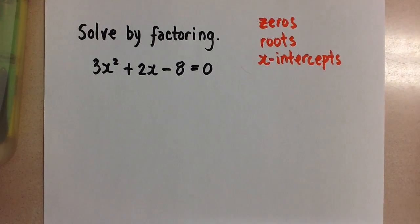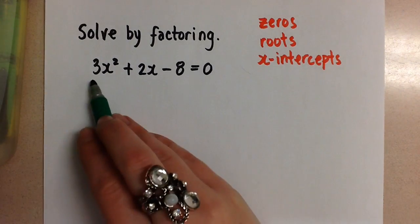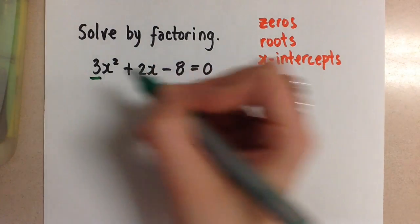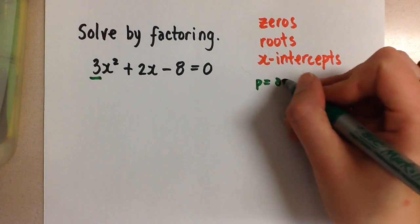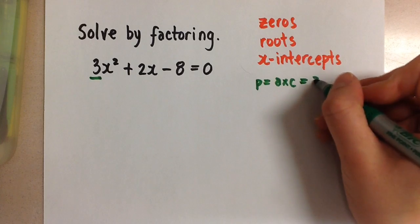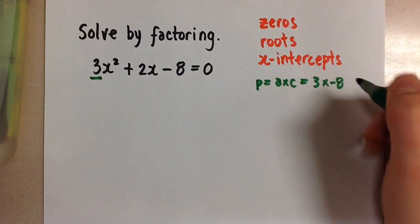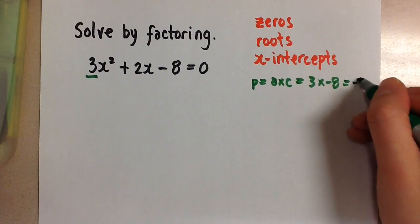If we're solving by factoring here, we see that this is a complex trinomial because the a value is not equal to 1. So our product is going to be a times c, which is 3 times negative 8, and that gives us negative 24.